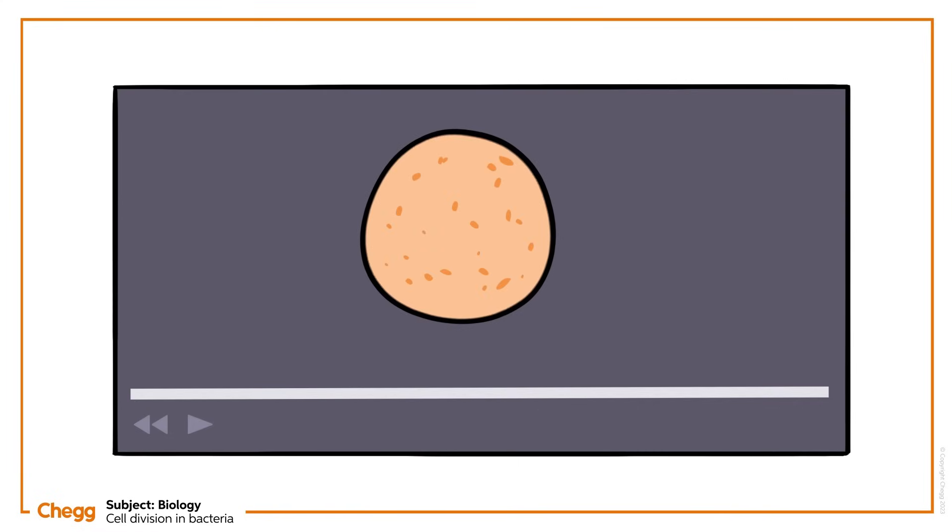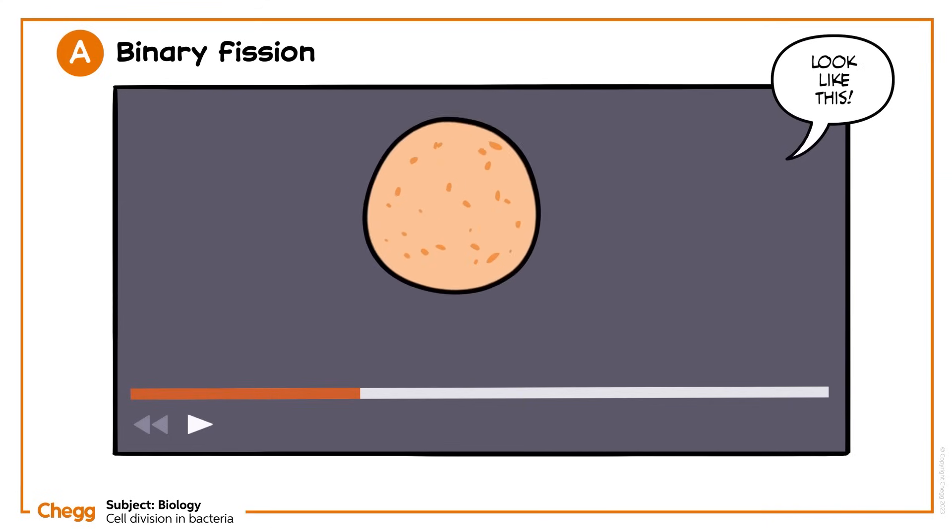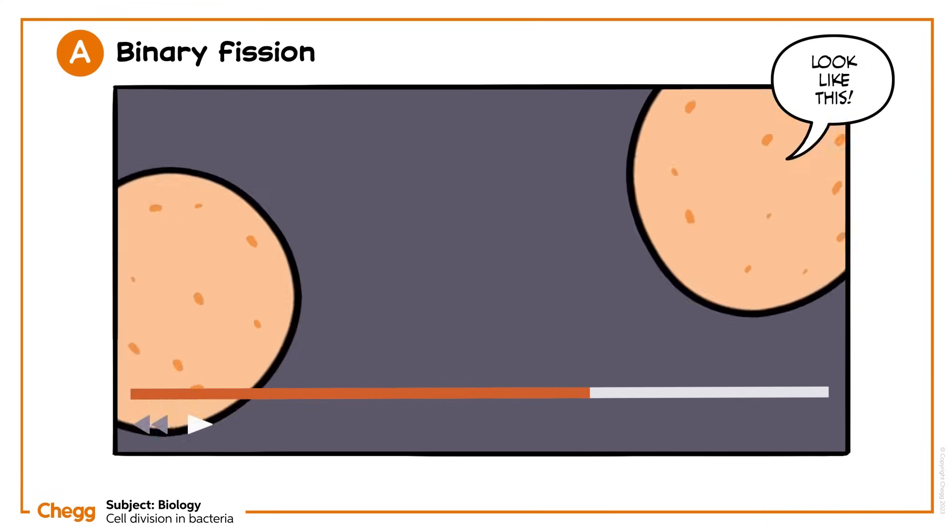Under favourable conditions, the most common way for most bacteria to reproduce is through binary fission. It looks something like this, resembling the mitotic process in multicellular organisms like plants and animals.